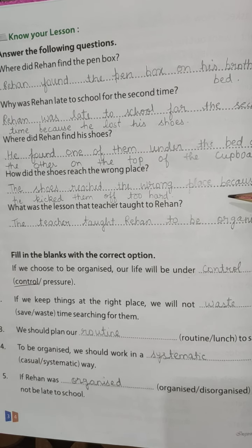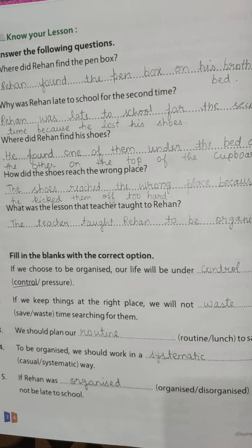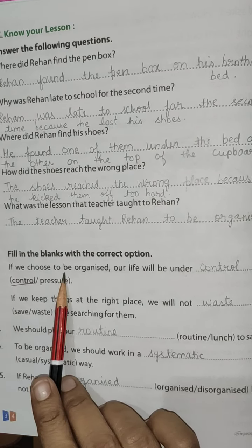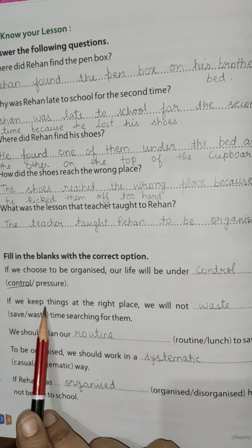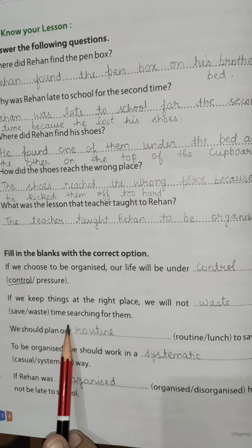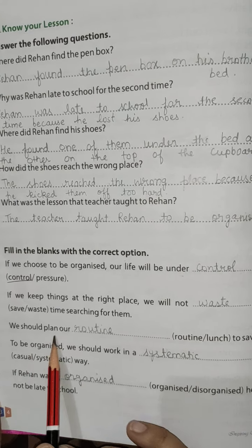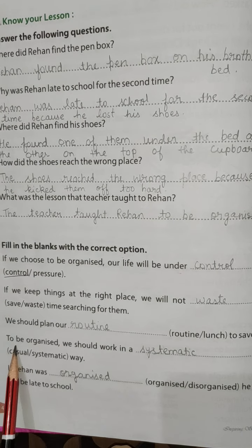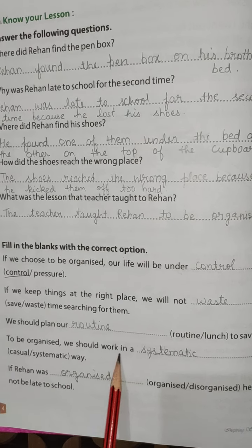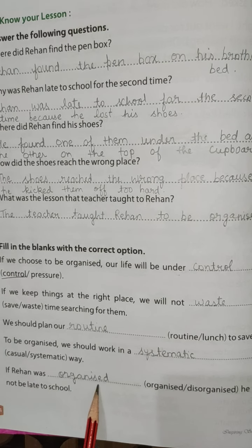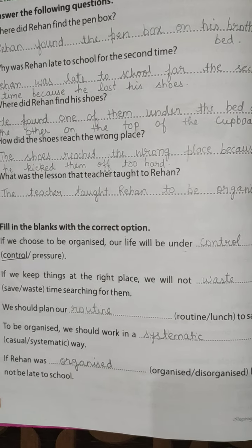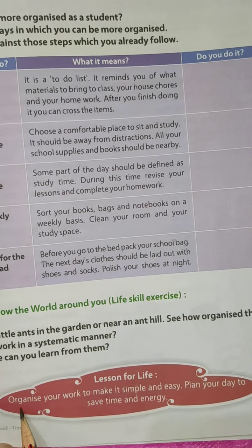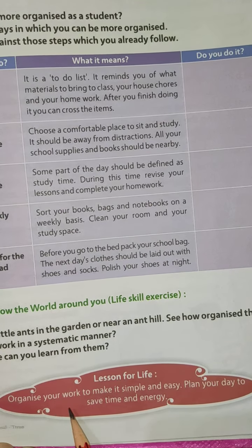What was the lesson that the teacher taught to Rehan? The teacher taught Rehan to be organized. If we choose to be organized, our life will be under control. If we keep things at the right place, we will not waste time searching for them. We should plan our routine to save time and work in a systematic way. If Rehan was organized, he would not be late to school. The moral of Smart Kid is: organize your work to make it simple and easy; plan your day to save time and energy.